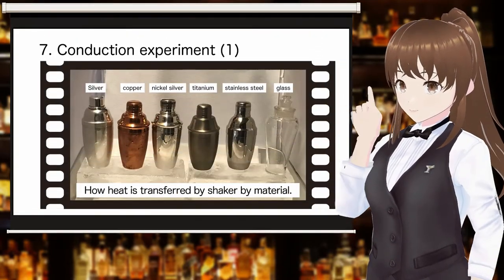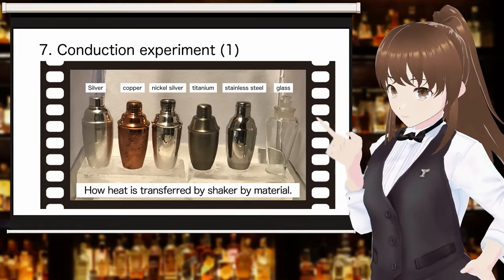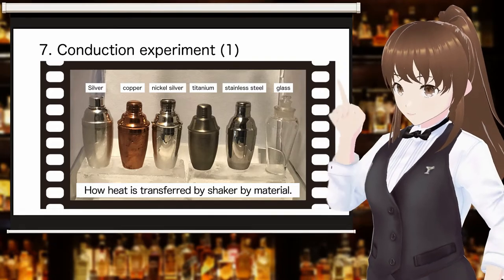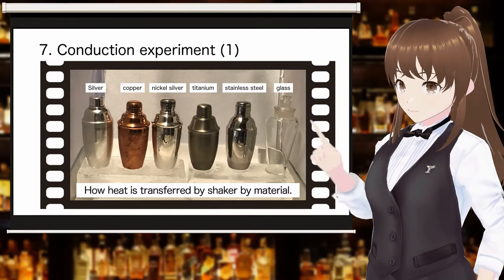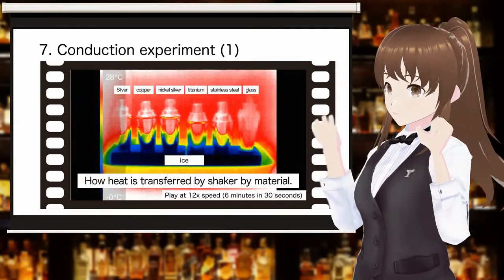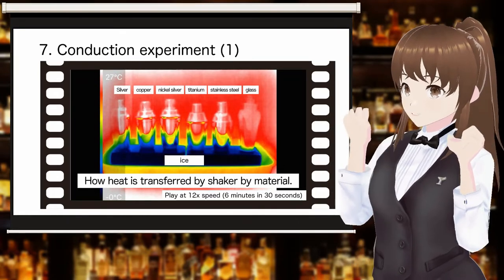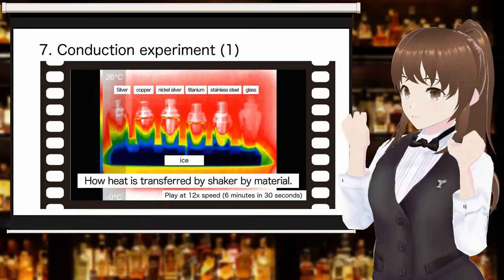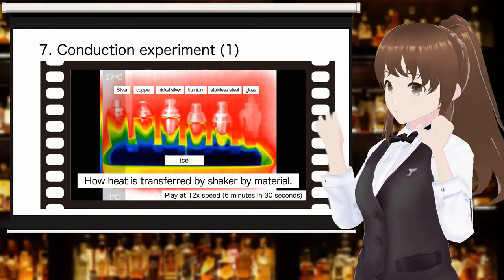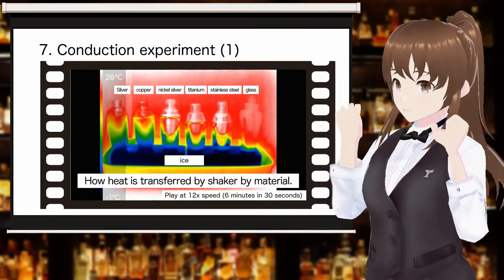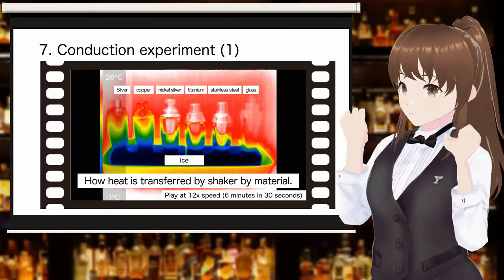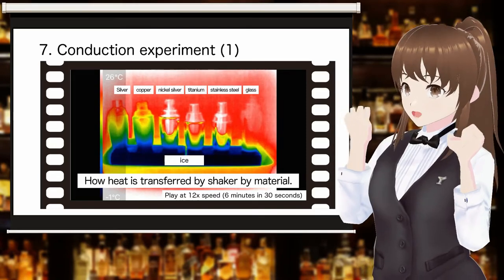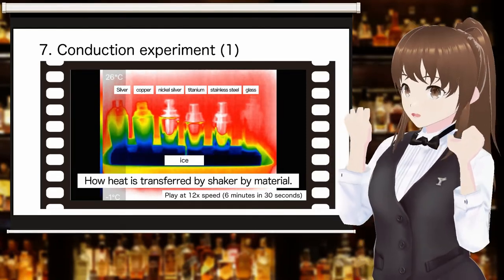Let us confirm the difference in heat transfer by thermal conductivity with an experiment. Shakers of different materials are placed side by side on ice, and the temperature change of the shakers is photographed by thermography. In the thermography image, areas with high temperature are displayed in red and areas with low temperature are displayed in blue. The change from red to blue proceeds quickly for silver and copper shakers, which have high thermal conductivity, followed by nickel silver, titanium, and stainless steel shakers. There is almost no color change for the glass shakers with low thermal conductivity.